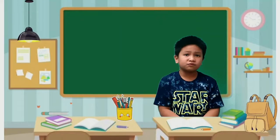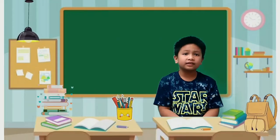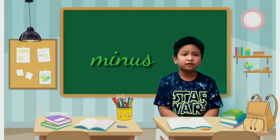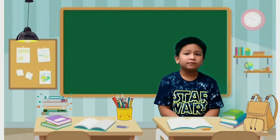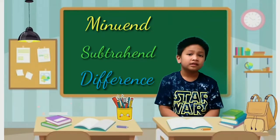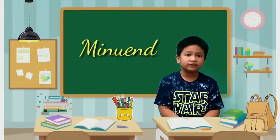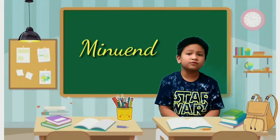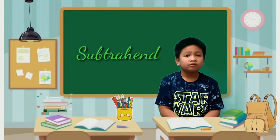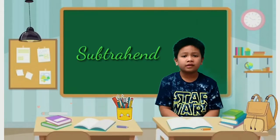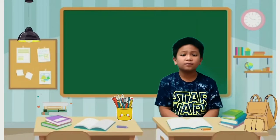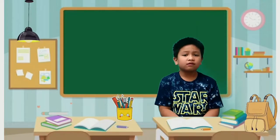A subtraction is represented by this sign which is called minus. And each of the figures are called minuend, subtrahend, and difference. The minuend is the number that we are going to subtract from, and the subtrahend is the quantity we are going to take away. The answer of minuend and subtrahend is called difference.